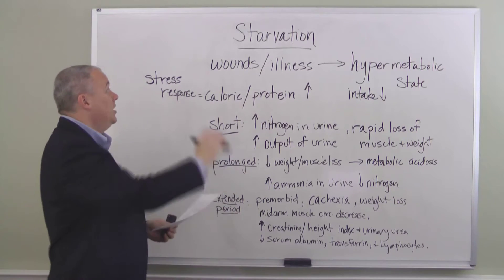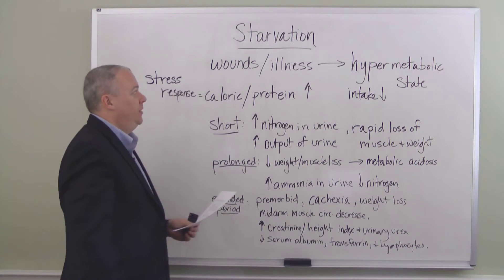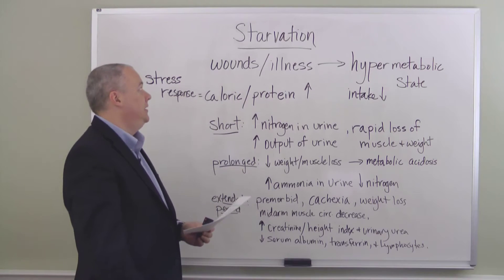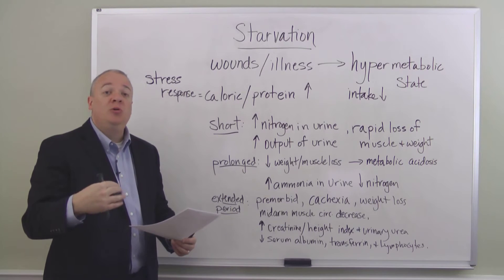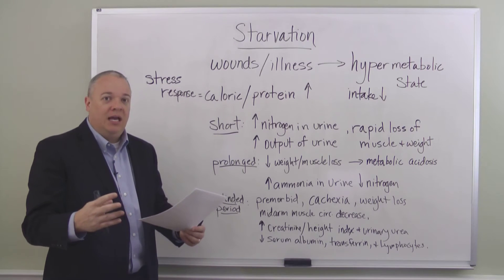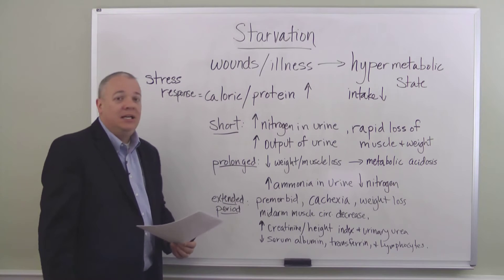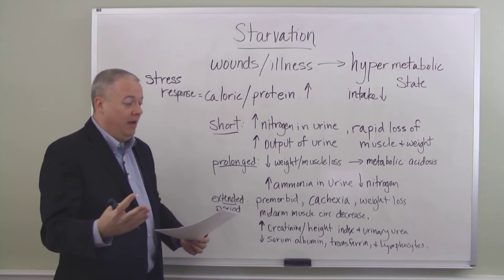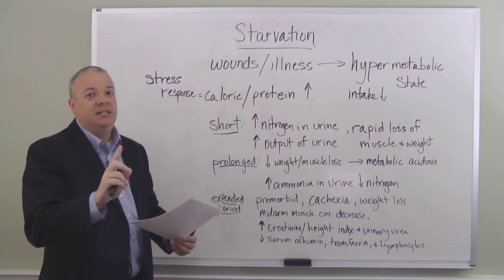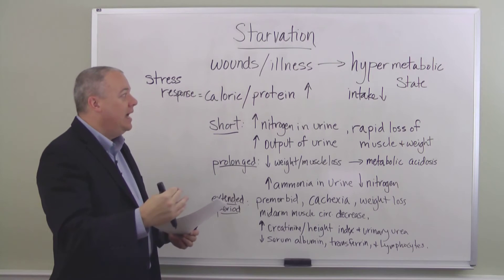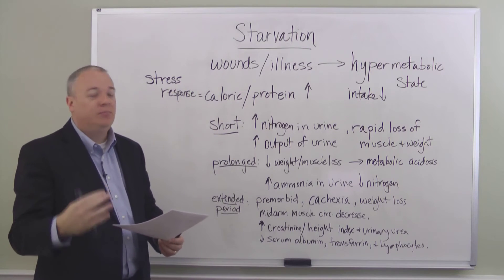Beginning with the triggers of starvation: wounds and illness lead to a stress response, and that produces a hypermetabolic state. This isn't the only cause of starvation, but the body responds to a wound or illness by creating stress, and in that stress response a hypermetabolic state is brought about. The body enters a hypermetabolic state, which leads to an increase in the body's need for calories and protein. And yet at the same time, due to the wounds and illness, you get a decrease in the amount of intake of calories and proteins.